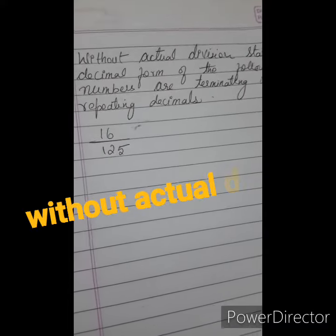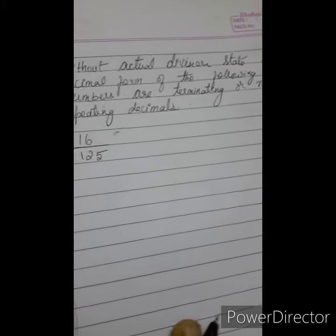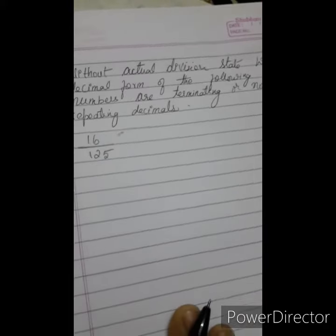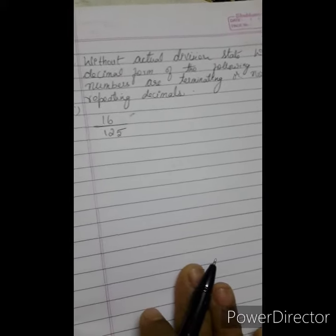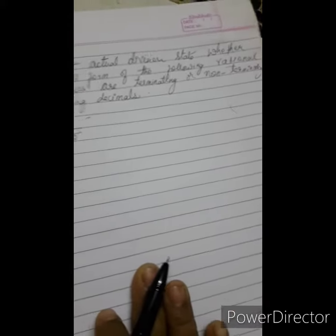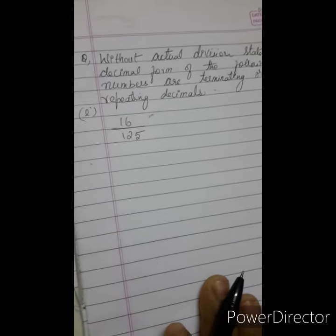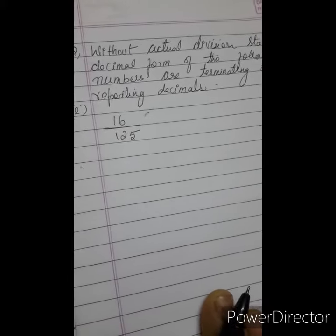Today we are going to solve a P by Q form number without actual dividing. So here the question comes, without actual division, state whether decimal form of the following rational numbers are terminating or non-terminating repeating decimals. The number is 16 by 125.